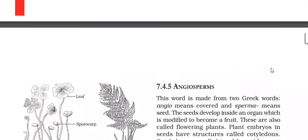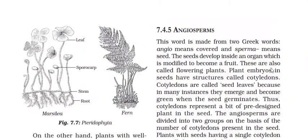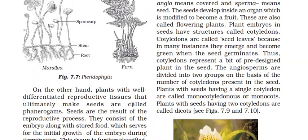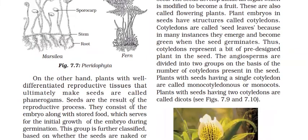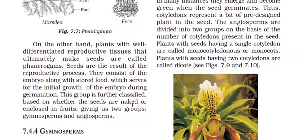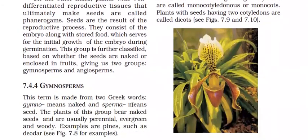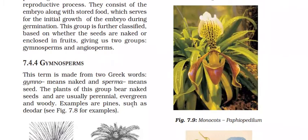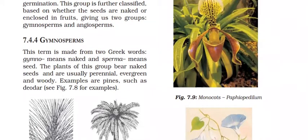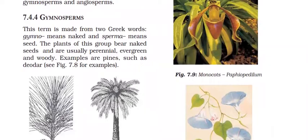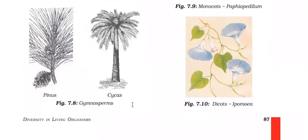The plants in which the reproductive tissue is visible are called Phanerogams — their seeds are the result of the reproductive process. Phanerogams are divided into gymnosperms and angiosperms. Gymnosperms comes from two Greek words: gymno meaning naked and sperma meaning seeds. In gymnosperms, seeds are not enclosed in fruits. They are perennial, evergreen, and woody. Examples include pine and deodar, which are more commonly found at hill stations.